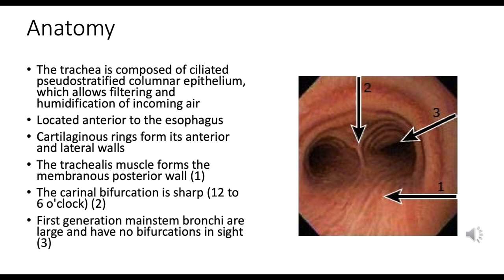The trachea is situated anterior to the esophagus. Its anterior and lateral walls are reinforced with C-shaped cartilaginous rings that prevent collapse and ensure an open airway. The membranous posterior wall, which faces the esophagus, contains the trachealis muscle — smooth muscle that allows adjustments in tracheal diameter, particularly during coughing.